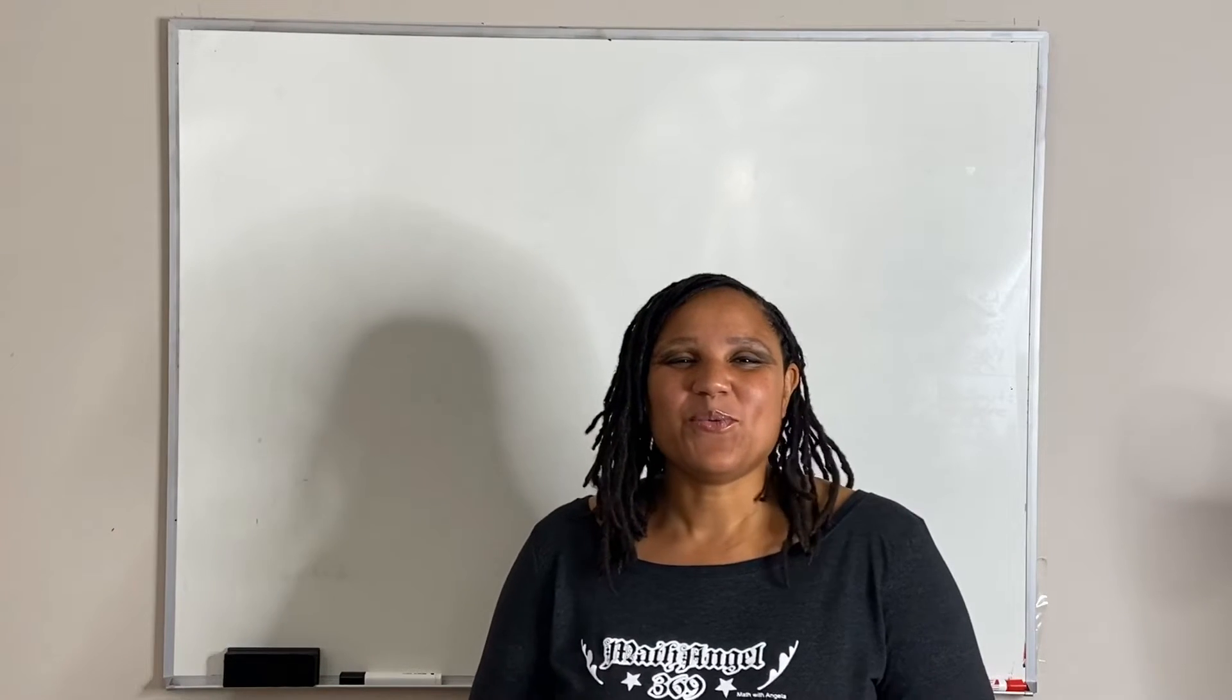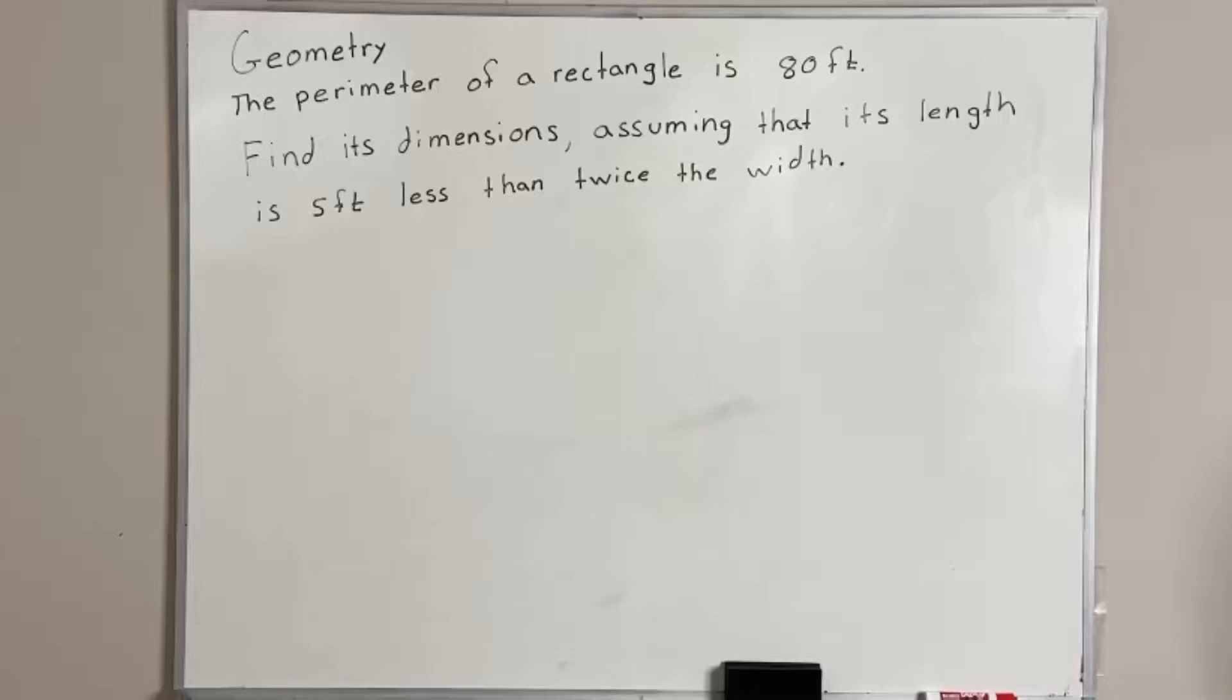Okay, so let's get started with our first problem. Geometry. The perimeter of a rectangle is 80 feet. Find its dimensions assuming that its length is 5 feet less than twice the width.